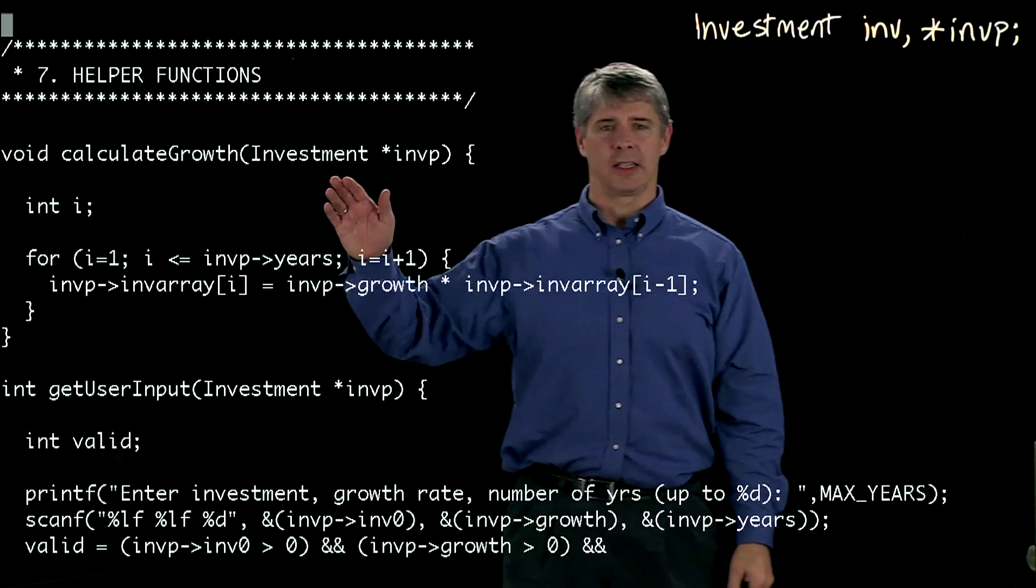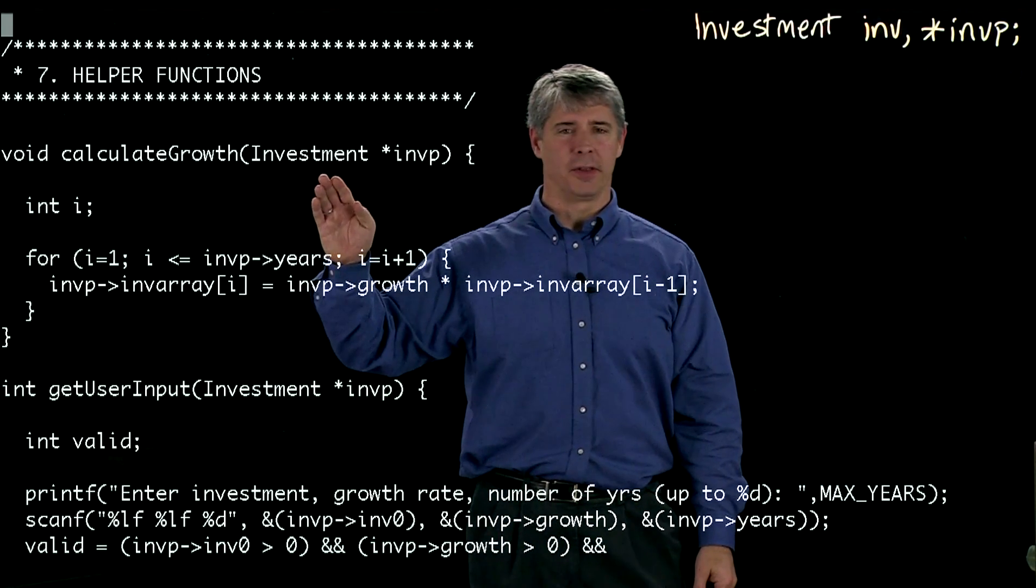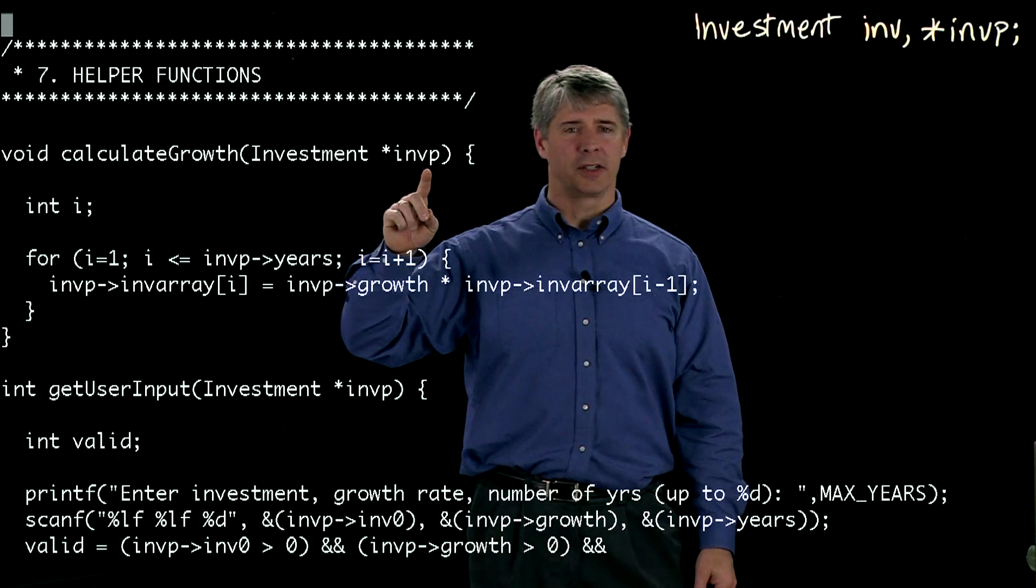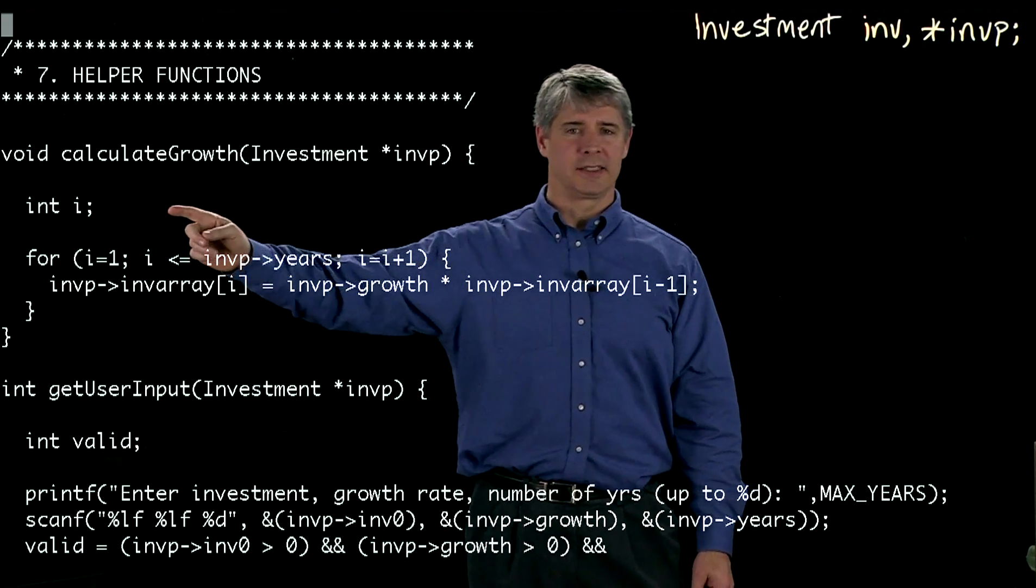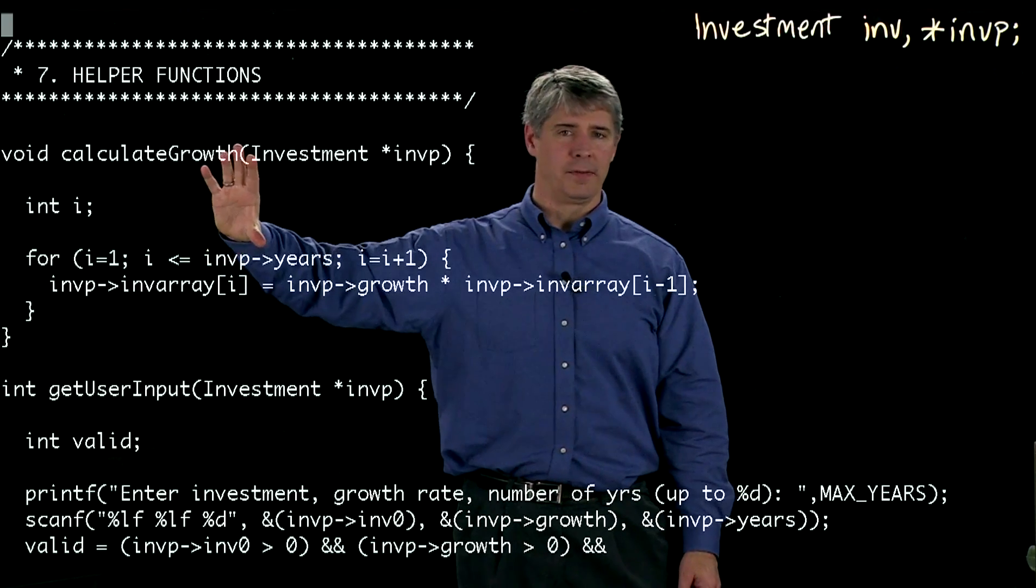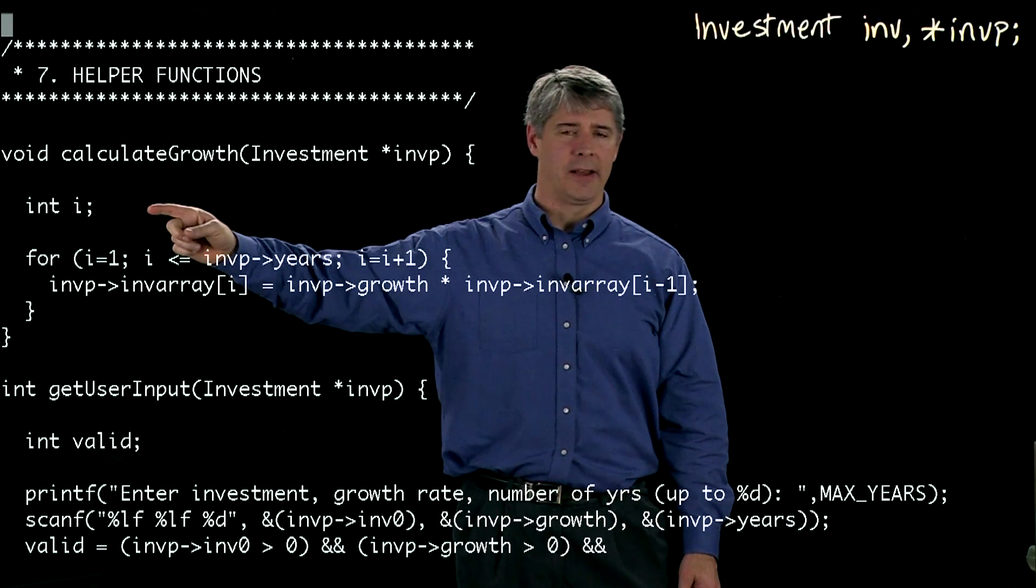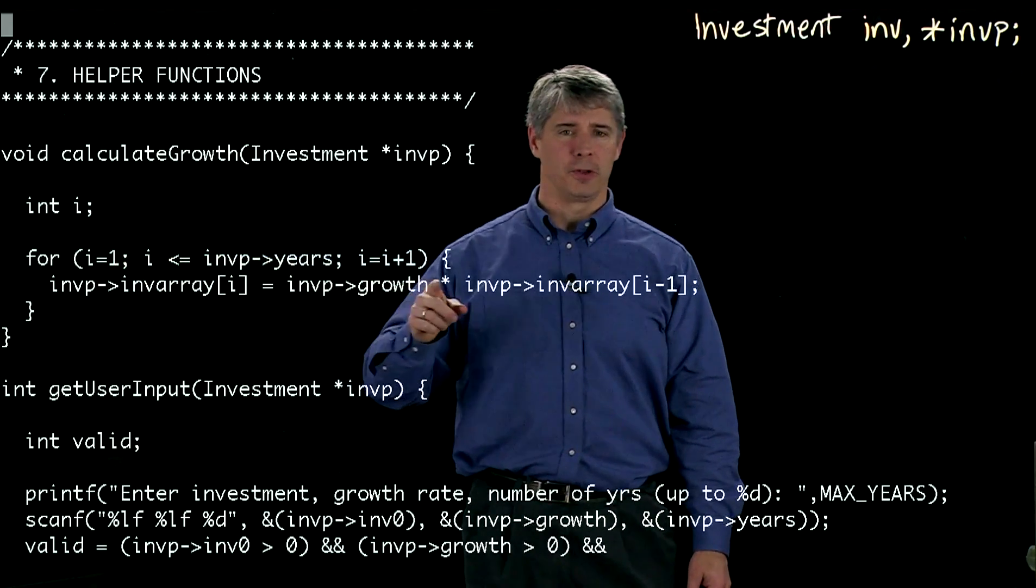So let's take a look at the helper function calculate growth. It's going to take a pointer inv p to something of type investment. First thing it does is it defines a local variable only valid in this function called i, and then it goes through a for loop here.